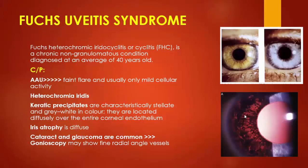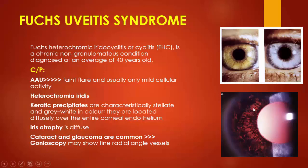Fuchs heterochromic iridocyclitis is a chronic non-granulomatous condition diagnosed at an average age of 40 years. Clinically it is characterized by anterior uveitis with mainly faint flare and usually only mild cellular activity. The second feature is heterochromic iridis with different iris color due to depigmentation of the affected iris. The third feature is keratic precipitates, which are grayish-white stellate lesions diffusely present at the entire corneal endothelium. The fourth feature is iris atrophy. In Fuchs uveitic syndrome, cataract and glaucoma are common, and gonioscopy shows fine radial angle vessels.